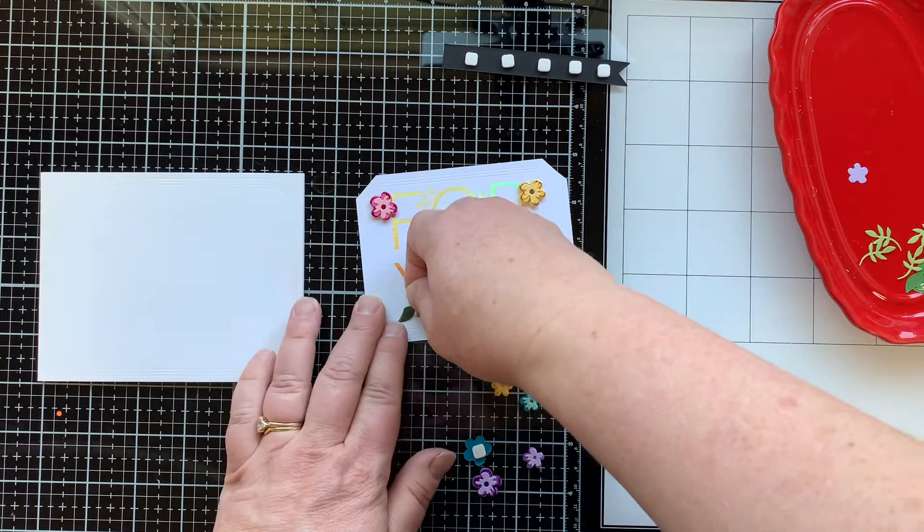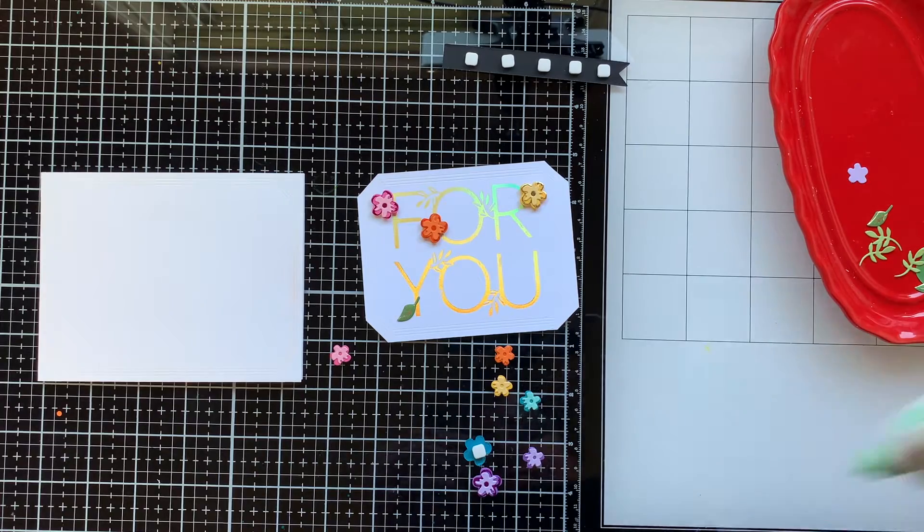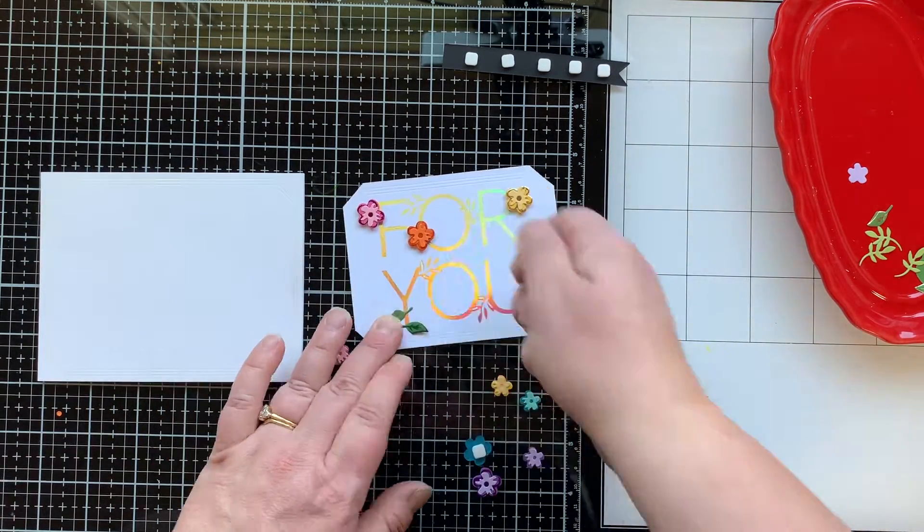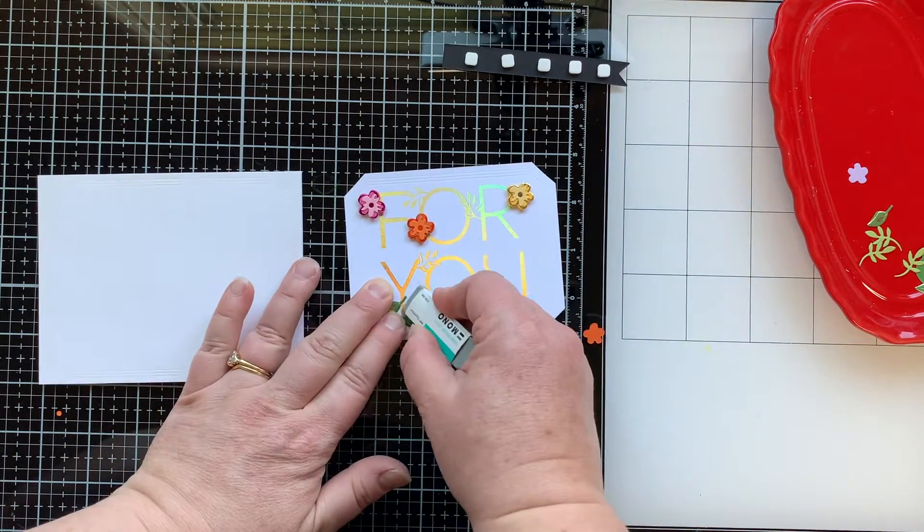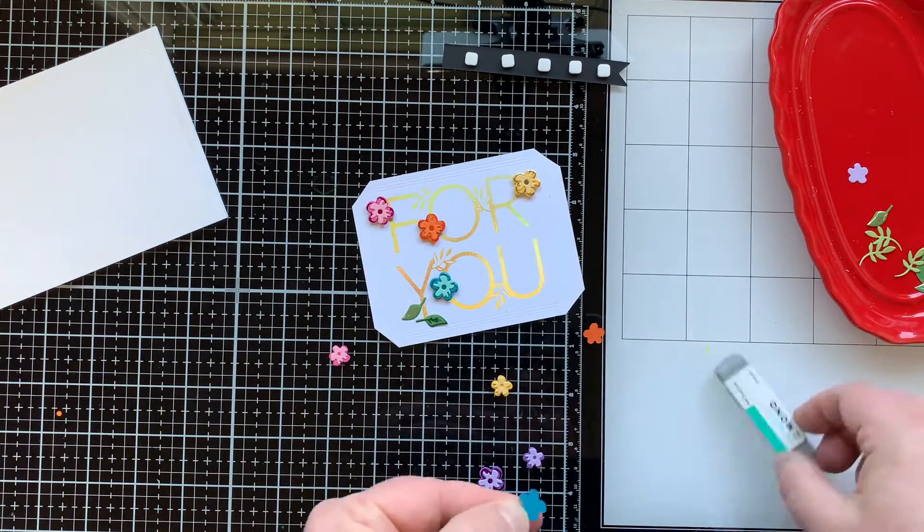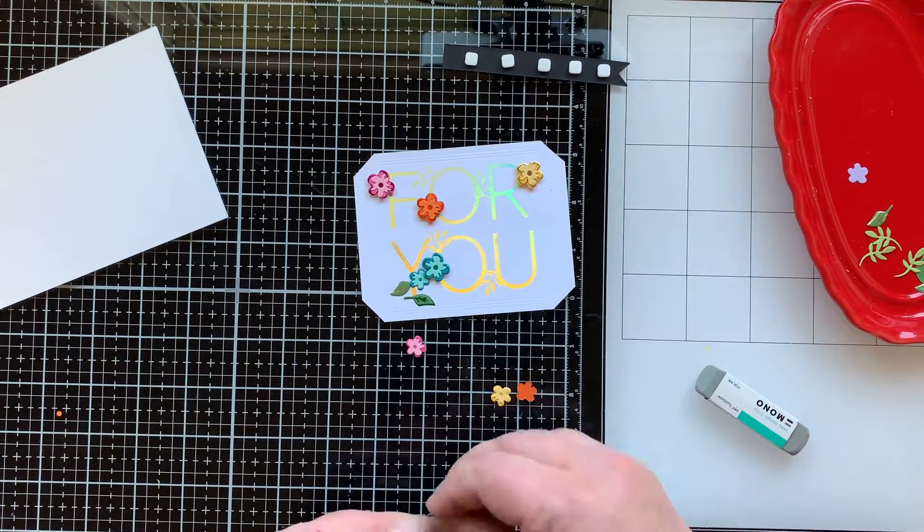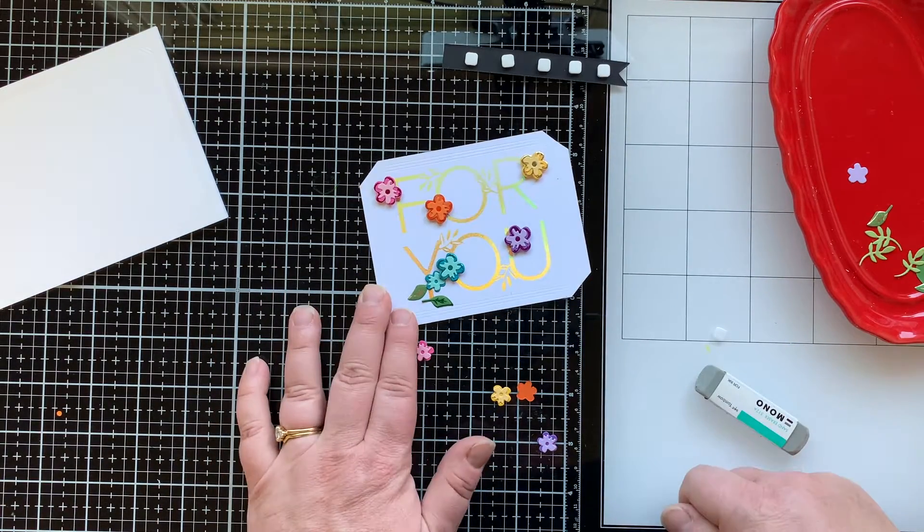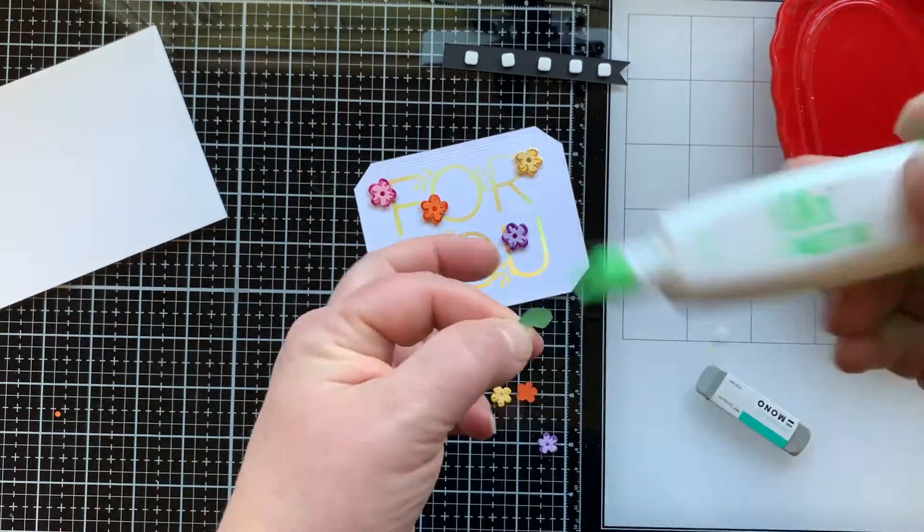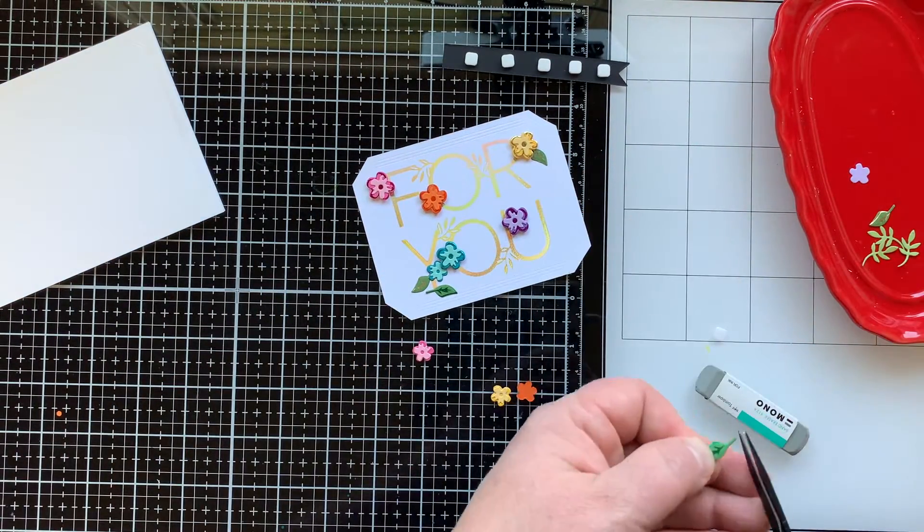All right, so now I'm going ahead and figuring out where I want those flowers to go in and around that for you sentiment, which is how this set is designed to work for those flowers to kind of dress up your sentiment. So there you go. And that aura foil, it is like gold with an iridescent shine to it. I love it. It's fabulous. All right, so those flowers are going kind of in rainbow order, three colors across the top and three colors across the bottom.